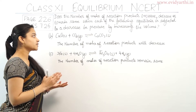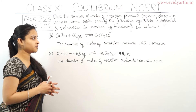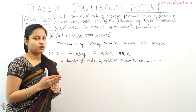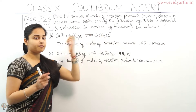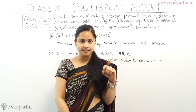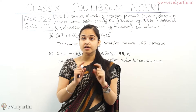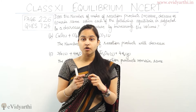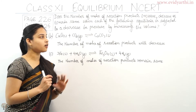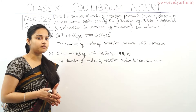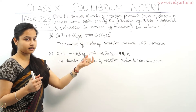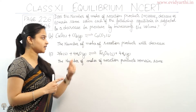Coming to part B: the reaction is CaO(s) + CO2(g) ⇌ CaCO3(s). The number of moles of gases is present in the reactant side but not in the product side. According to Le Chatelier's principle, since pressure is decreased, equilibrium shifts toward more moles of gas — that is the backward direction — and hence the number of moles of reaction product will decrease.